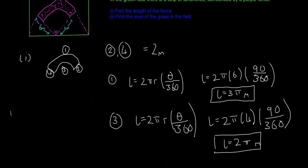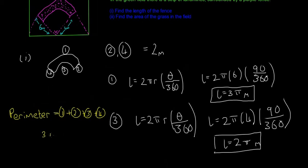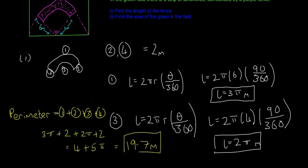To find the total length of the fence, we just add all four sides together. Side 1 is 3π metres, side 2 is 2 metres, side 3 is 2π metres, and side 4 is 2 metres. That gives us 4 + 5π metres total. Putting that into a calculator, the length of the fence is approximately 19.7 metres.